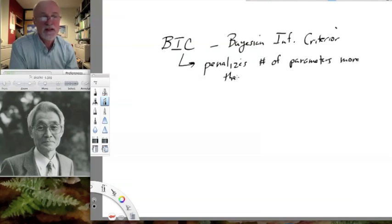that the Bayesian information criterion penalizes parameters, penalizes the number of parameters even more than AIC. In other words, it emphasizes simplicity in the models.